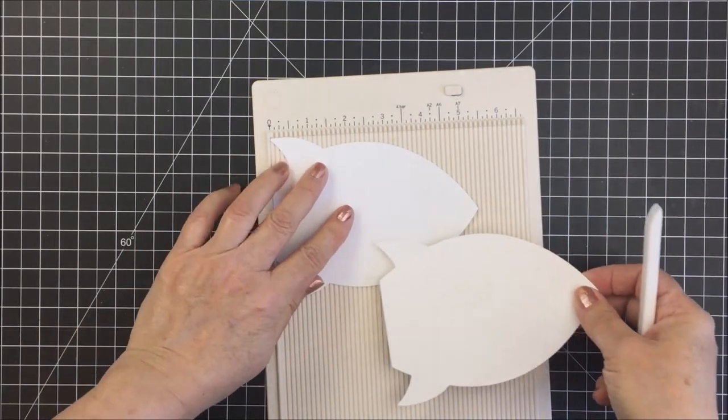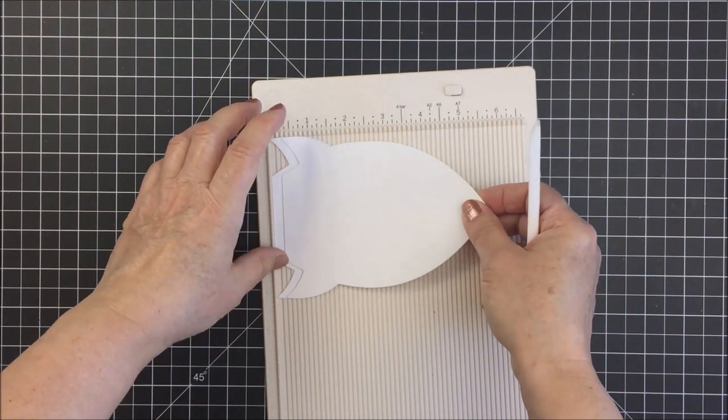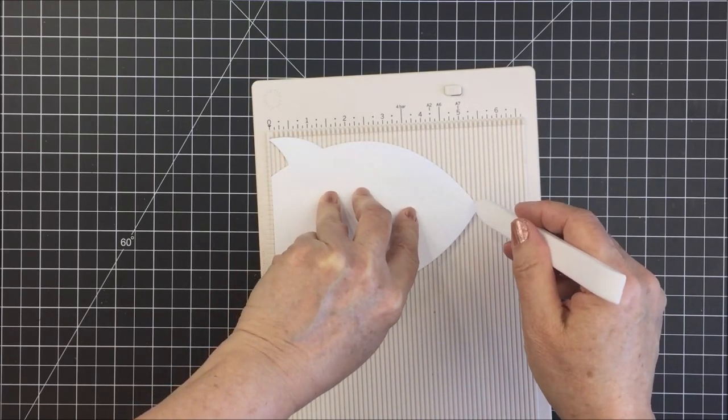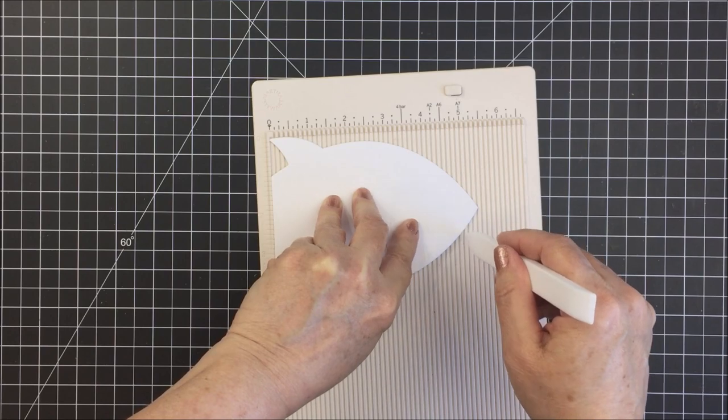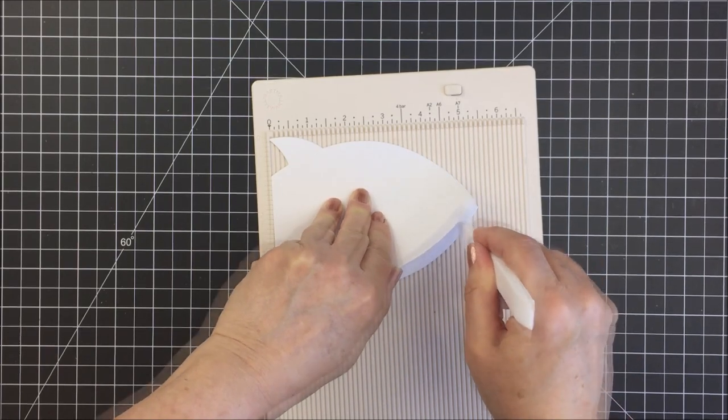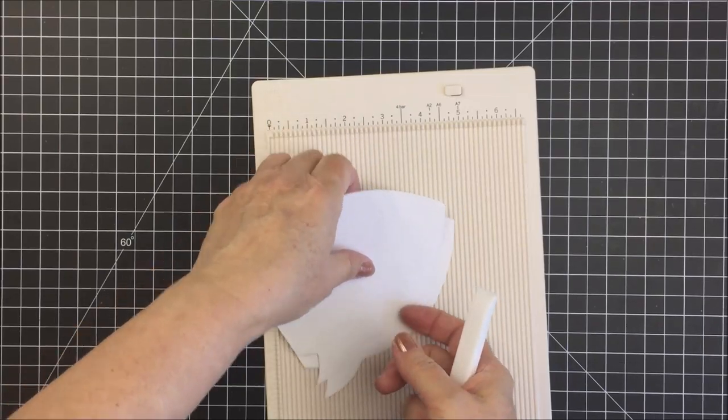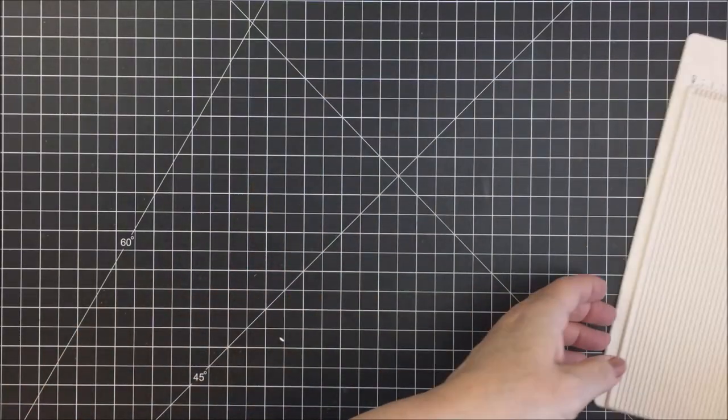You probably wouldn't have to score both pieces but I just went ahead and did that. I'm just kind of eyeballing here to make sure that I get the nose of the ship scored in exactly the same spot on the front and back of the card.